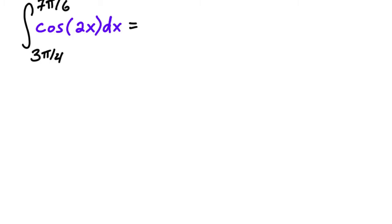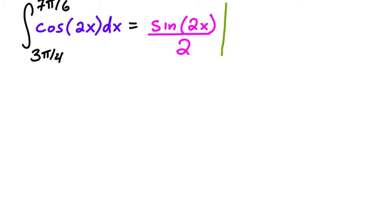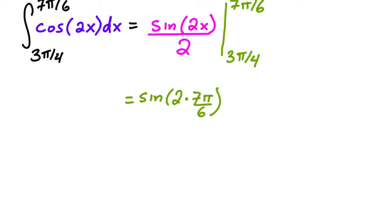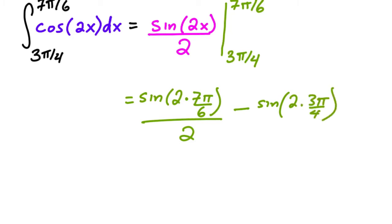For this function, the antiderivative that gives us cosine of 2x is sine of 2x, but we divide by 2 because of the chain rule. Remember, you can always test your antiderivative by differentiating. We evaluate from 3π over 4 to 7π over 6, plugging in top minus bottom: sine of 2 times 7π over 6, all over 2, minus sine of 2 times 3π over 4, all over 2.